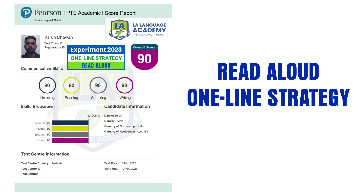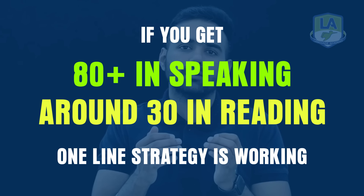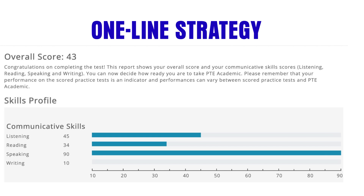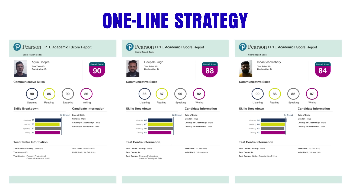Attempt your speaking part and skip everything else. If you get 80 plus in speaking and around 30 in reading, it means the one line strategy is working — it is giving you full points in speaking and full points in reading. If you're still not confident, go with the full reading. But this strategy has proved very beneficial for students who used to struggle with Read Aloud. I know it sounds weird — if someone had told me, I wouldn't have believed it — but with many students getting 90, I can confidently say this is still working in 2023.